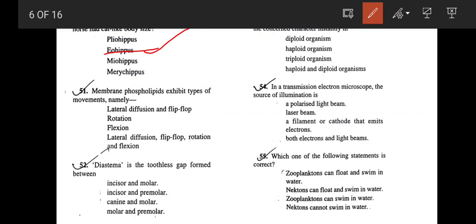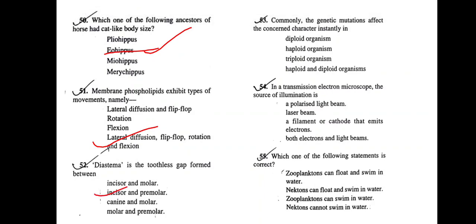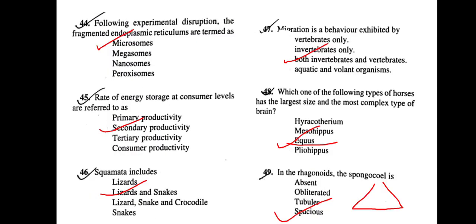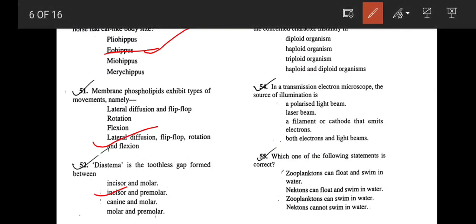Next question: Membrane phospholipids exhibit which type of movements? Membrane phospholipids exhibit lateral diffusion, flip-flop rotation and flexion. So correct answer would be option D. Next: Diastema is a toothless gap formed between incisor and premolar. Next: Commonly, the genetic mutations affect the concerned characteristics instantly in diploid organism, haploid, polyploid, or haploid and diploid? Correct answer would be haploid organism.